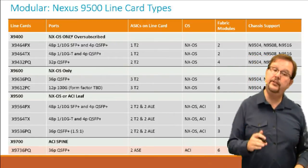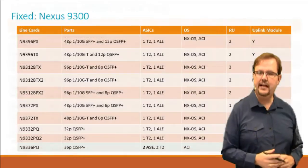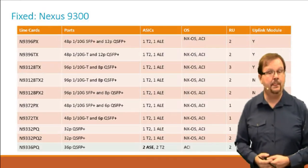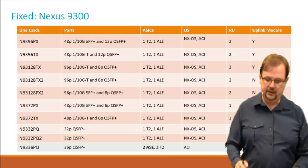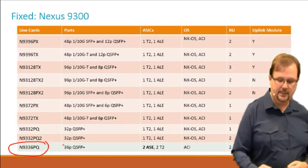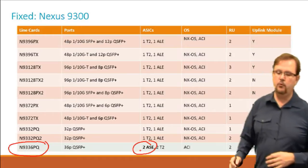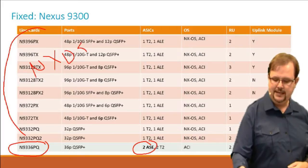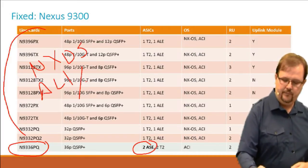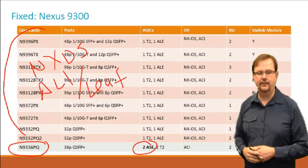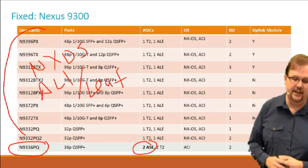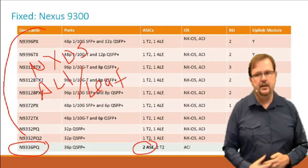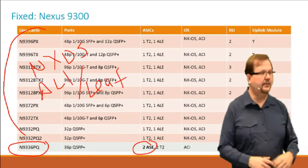Even numbers can only do NXOS. The 9300 is an odd number, so all of them are going to be able to do ACI — excluding the 9336PQ, which is a spine. The rest of the 9300s can either be NXOS or ACI leaf, and the different models just give you different speeds. They all have the ALE as well as the Trident T2.